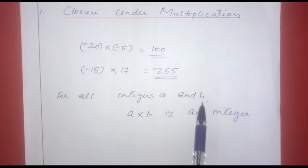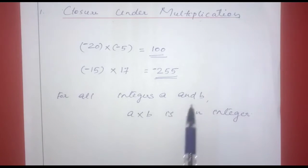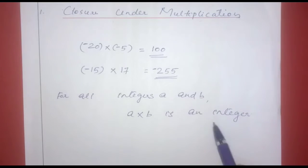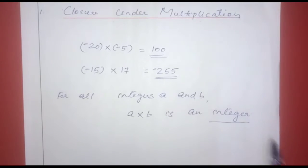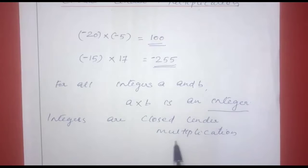For all integers A and B, if we multiply A and B, the result is also an integer. So we say integers are closed under multiplication. This is called the closure property.